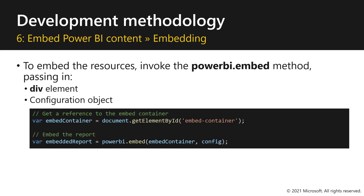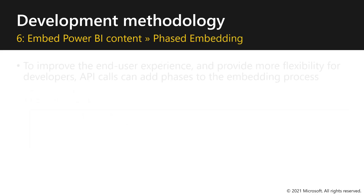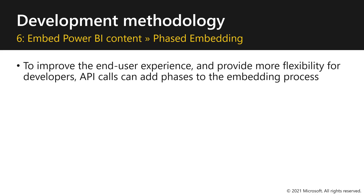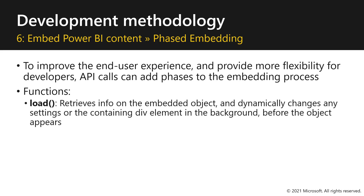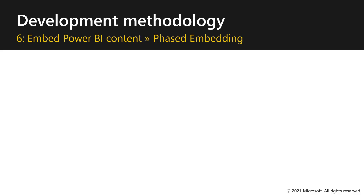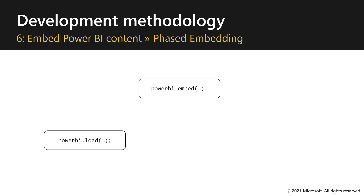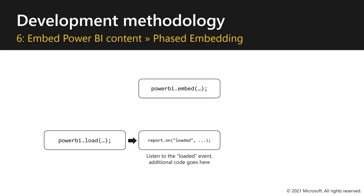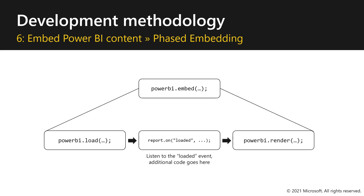A final step is to invoke the Power BI embed method by passing in the div element and the configuration object. To optimize the end-user experience, API calls can add phases to the embedding process. There are two functions: the load function, which retrieves information on the embedded object and dynamically changes settings or the div element in the background before the object appears; and the render function, which makes the object visible. Call the load function first, add any additional code for filtering or desired actions, then use the render function to display your content.